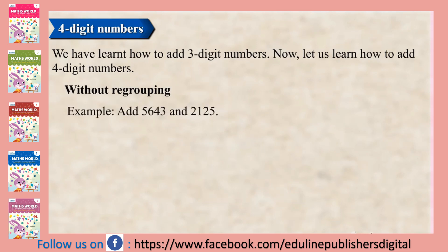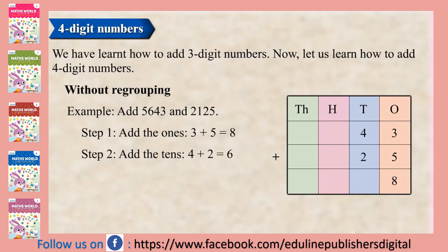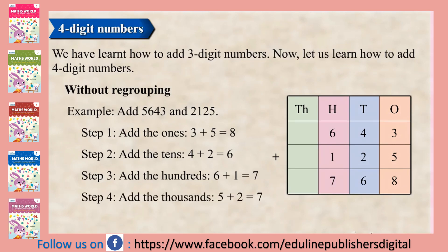Example: Add 5,643 and 2,125. Step 1: Add the 1's — 3 plus 5 is equal to 8. Step 2: Add the 10's — 4 plus 2 is equal to 6. Step 3: Add the 100's — 6 plus 1 is equal to 7. Step 4: Add the 1000's — 5 plus 2 is equal to 7. Answer: 7,768.